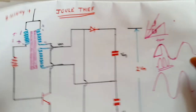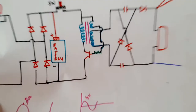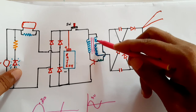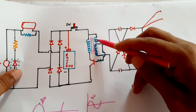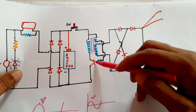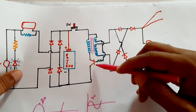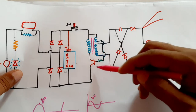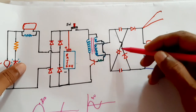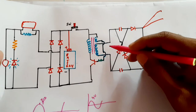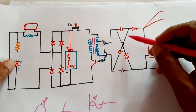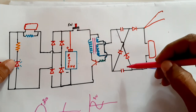The voltage is available at the output. The oscillation continues — the circuit keeps oscillating, generating an AC signal. The frequency of this AC generator is dependent upon the value of the inductance.